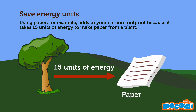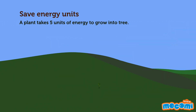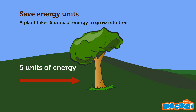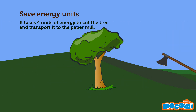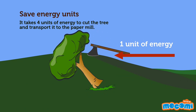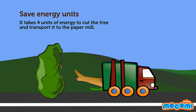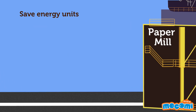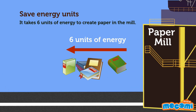Save Energy Units. Using paper, for example, adds to your carbon footprint because it takes 15 units of energy to make paper from a plant. A plant takes 5 units of energy to grow into a tree. It takes 4 units of energy to cut the tree and transport it to the paper mill. It takes 6 units of energy to create paper in the mill.